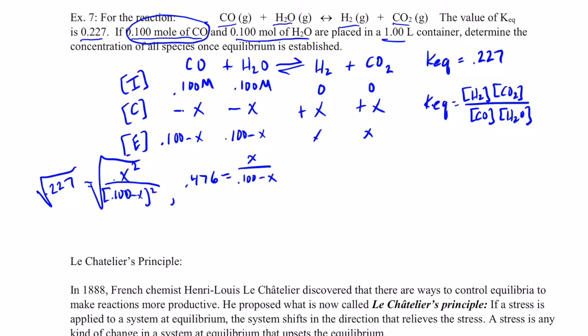So let's go ahead and clear our denominator. So we have 0.476 times 0.1 minus x equals x, and now we'll go ahead and distribute the 0.476 through the 0.1 and the negative x.